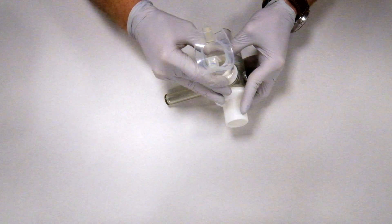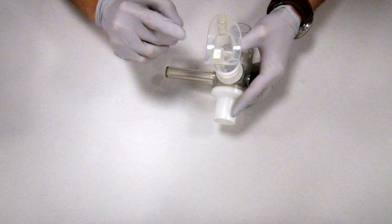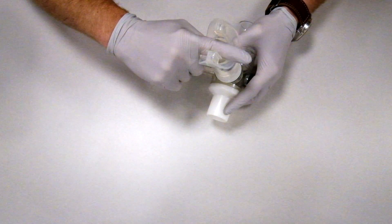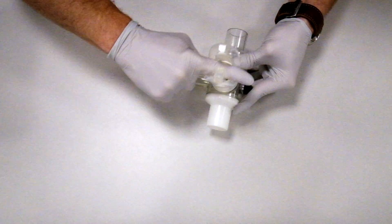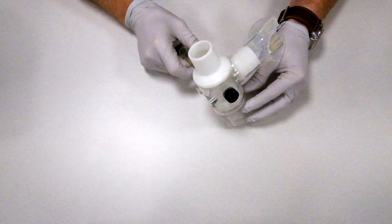The easiest way to do this is get it on just a little bit, then take your finger, place it right here in the center, and wiggle it on. And that is your mouthpiece.